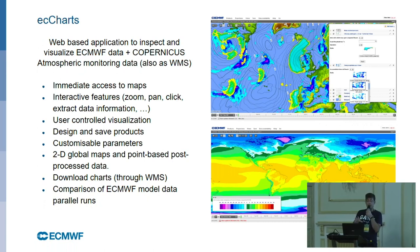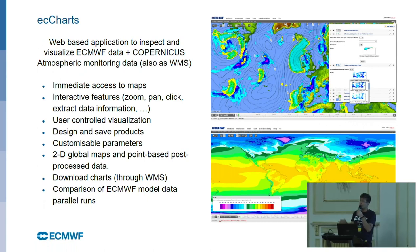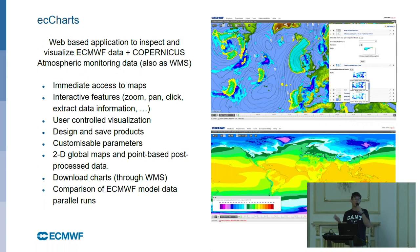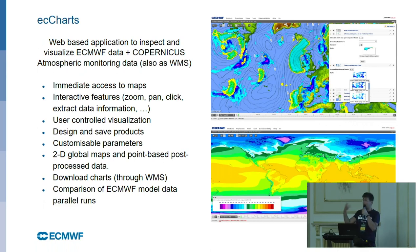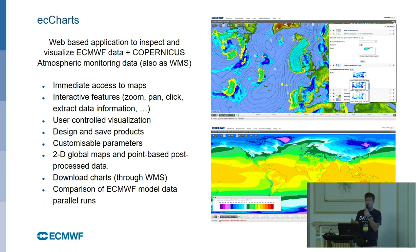The interface can do 2D global maps — we only work on the global level, so all our data are global and users can see any forecast data all around the world. They can also do point-based post-processed data in terms of time series, so they can click anywhere on the world and see time series of those probabilistic forecast data. We have the standard OGC WMS service available as well, and we also offer customers the ability to compare different versions of the model.